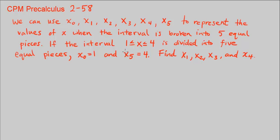This is CPM Pre-Calculus Chapter 2, Number 58. We can use x sub 0, x sub 1, x sub 2, x sub 3, x sub 4, and x sub 5 to represent the values of x when the interval is broken into 5 equal pieces. So if the interval 1 is less than or equal to x is less than or equal to 4 is divided into 5 equal pieces, x sub 0 is equal to 1 and x sub 5 is equal to 4. Find x sub 1, x sub 2, x sub 3, and x sub 4.